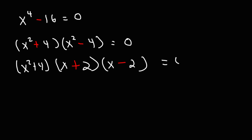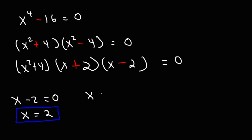Now we're going to set each factor equal to 0. If we set x minus 2 equal to 0, we get our first answer: x is equal to positive 2. If we set the other factor, x plus 2, equal to 0, and subtract both sides by 2, we get another real solution: x is equal to negative 2.